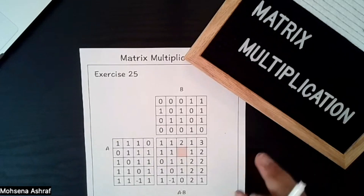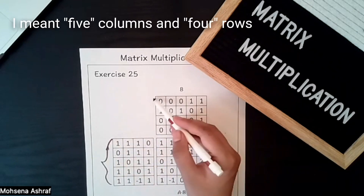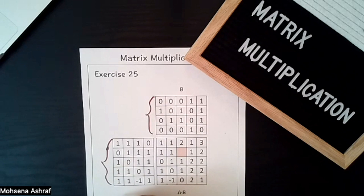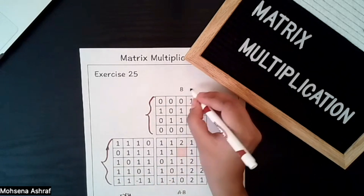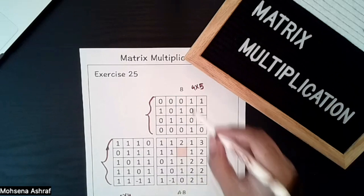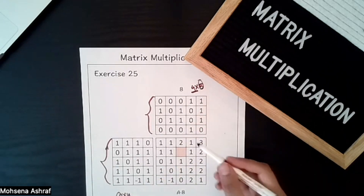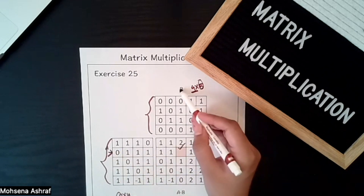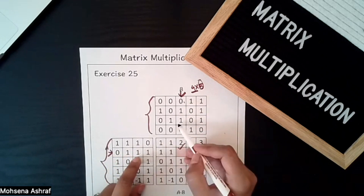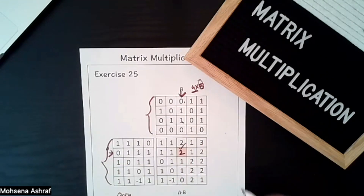For our last example, we have a bigger resultant matrix. The first matrix has 5 rows and 4 columns (5×4) and the second matrix has 4 rows and 5 columns (4×5). The first matrix's column equals the second matrix's row, so we can multiply them, giving a resultant dimension of 5×5. For a specific position, multiplying this row with this column: 0×0 + 1×1 + 1×1 + 1×0 = 1+1 = 2.